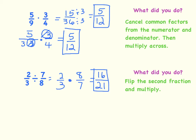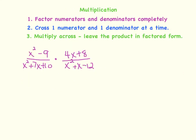Both of these skills that we have just reviewed we will be using when we multiply and divide rationals. There are basically 3 steps to multiplying rationals. Step number 1 is to factor the numerators and denominators completely. Step number 2 is to cross out one numerator and one denominator at a time. And then number 3, multiply across, leaving the product in factored form.